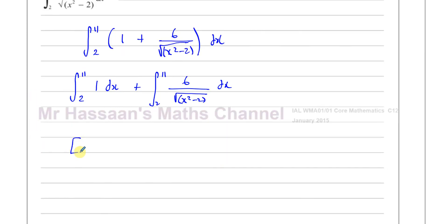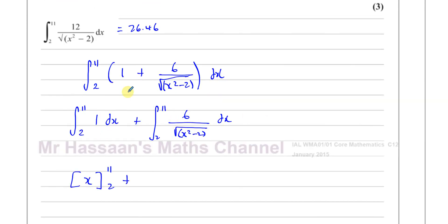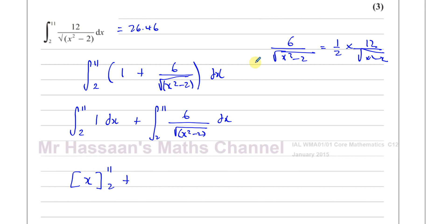Integrating 1 gives x, evaluated between 2 and 11, which gives 11 minus 2 equals 9. Now, 6 over the square root of x squared minus 2 is exactly one half times 12 over the square root of x squared minus 2. This is exactly true. So I can write this second integral as one half times the integral of 12 over the square root of x squared minus 2 dx — that way I've expressed it in terms of what we already know.